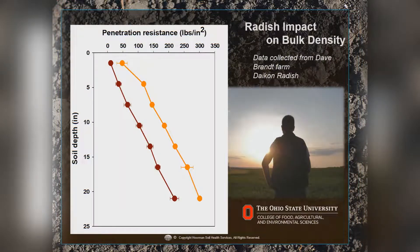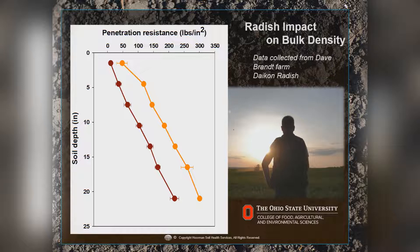Research at Dave Brandt's farm shows the radish impact on bulk density. A conventional field on the right-hand side was compared to a long-term no-till field with radishes, and there was a 40% reduction in soil compaction where the radishes were present — because radishes are very good at loosening and adding pore space to soils.